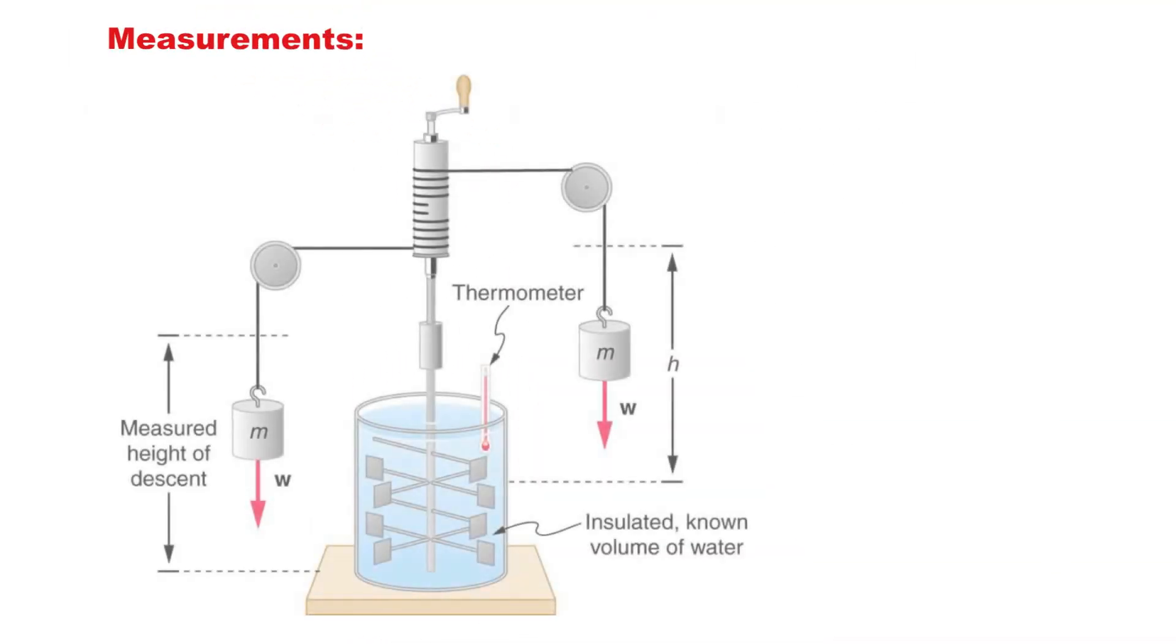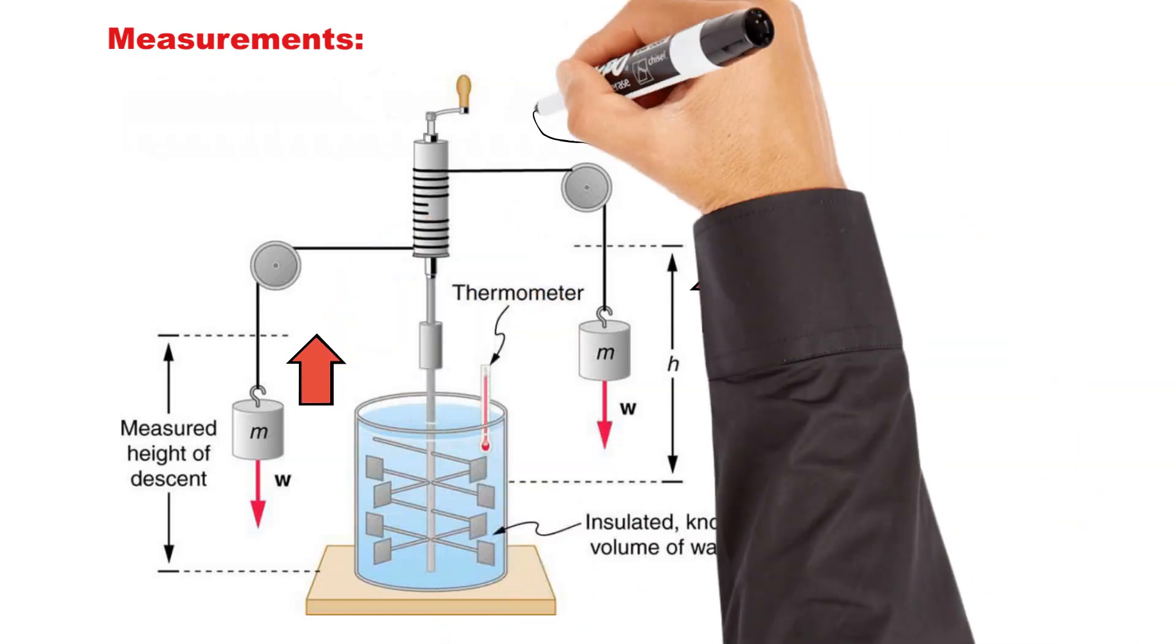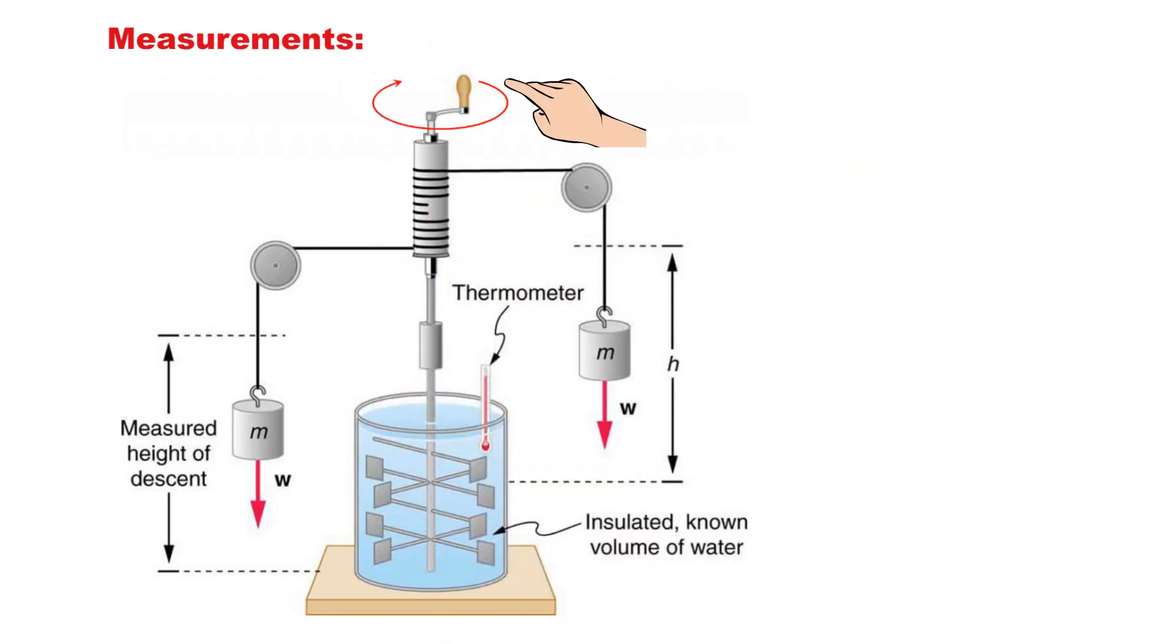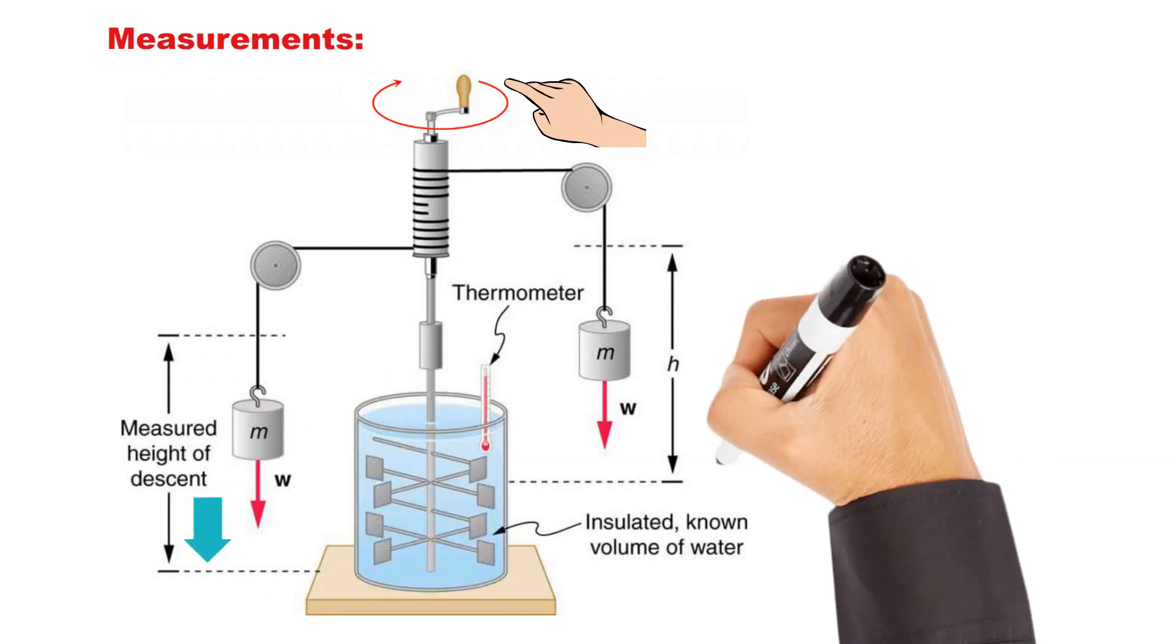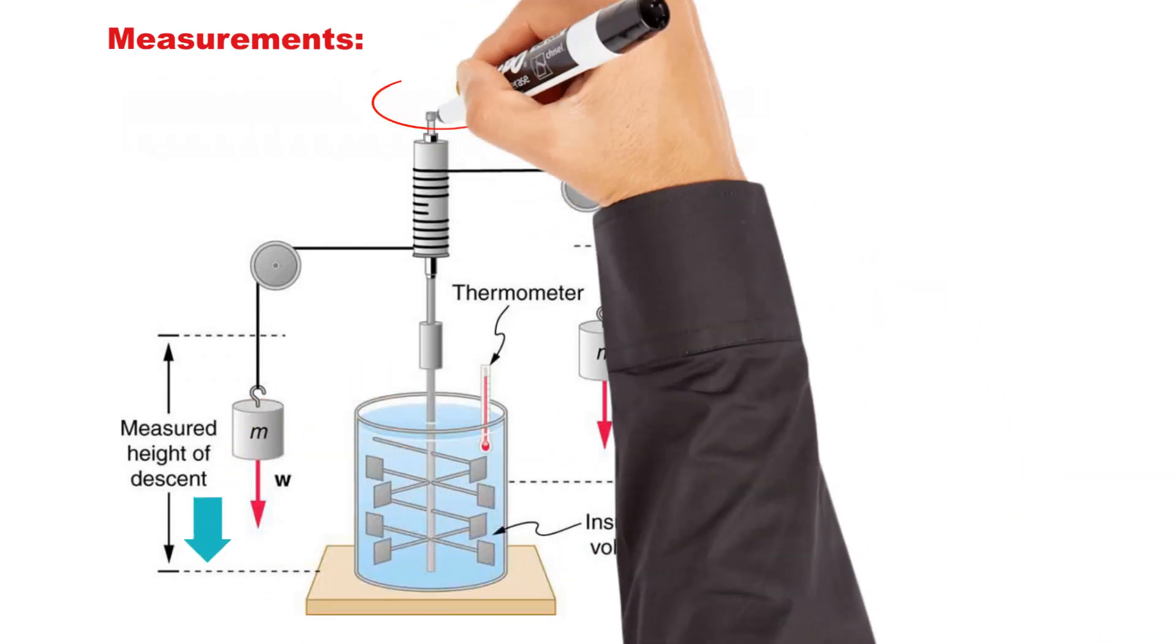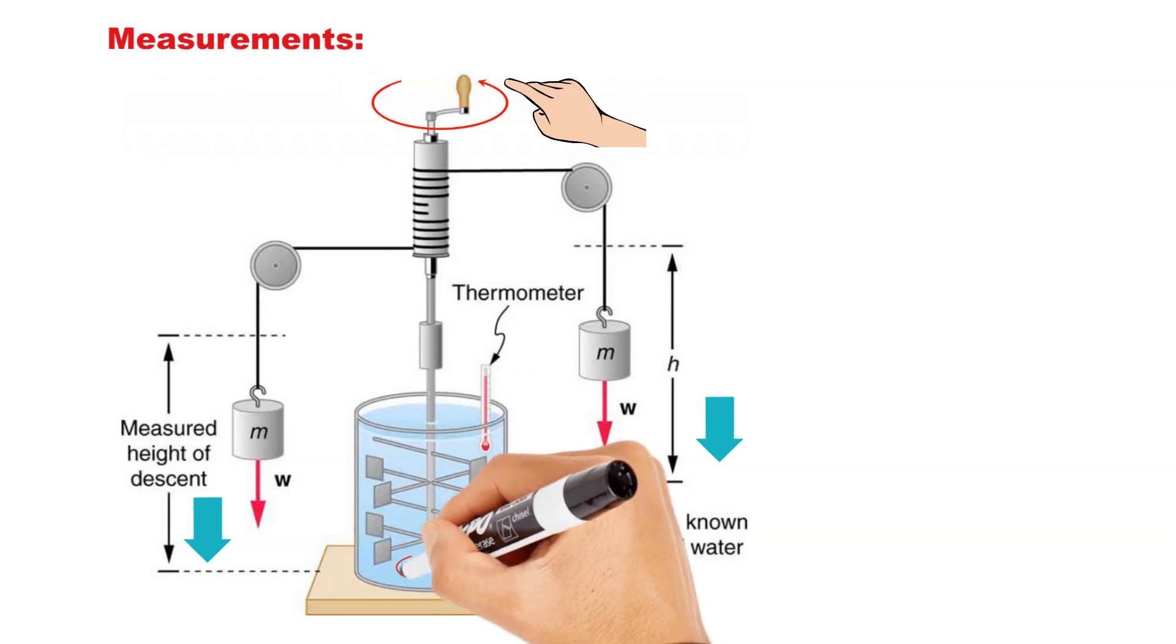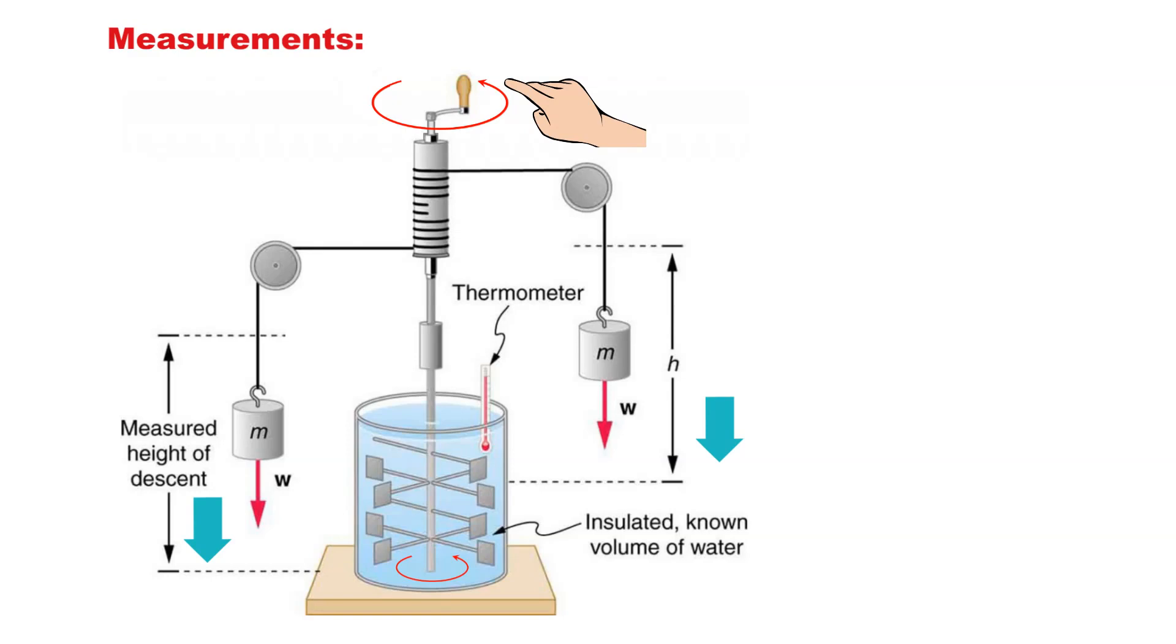Now, let's see the measurements. The masses were raised to the height H by rotating the handle. The masses were then allowed to fall down to the same height by rotating the handle in the reverse direction. The falling weight rotated the spindle and paddle assembly. As a result, the mechanical energy is converted into heat, and the temperature of the water was increased. The process was repeated multiple times, and Joule noted the rise in temperature in each case.